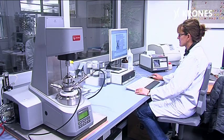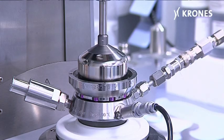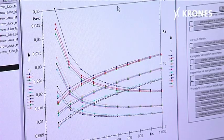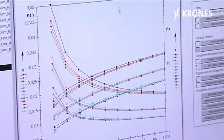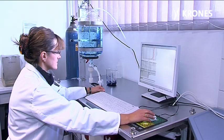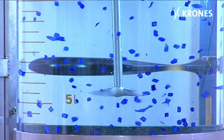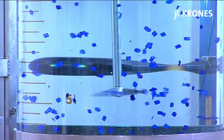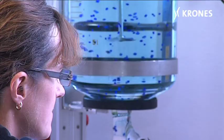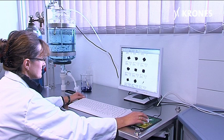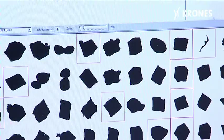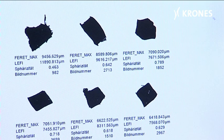For dimensioning a machine, we measure the viscosity of the products concerned in the laboratory, covering a series of different temperature ranges. The product's thermal conductivity is also ascertained in order to calculate the size of the unit required. Products may also be encountered which contain fruit chunks or fibres, which alters the drink's character — this is why we additionally determine the particle size distribution involved.